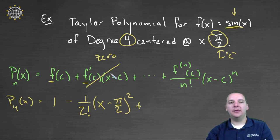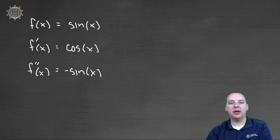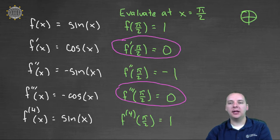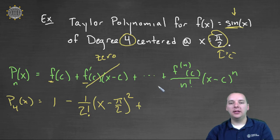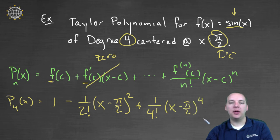Plus f triple prime at zero, but remember f triple prime was zero, so that term's gone. Then the next term would be the fourth derivative at pi over two, which is one, over four factorial, times x minus pi over two to the fourth power. So this is basically our answer.